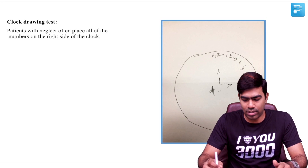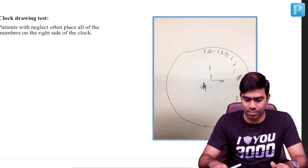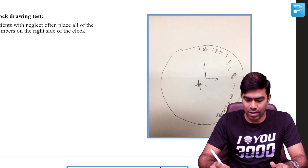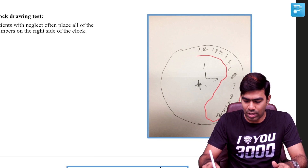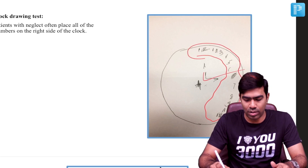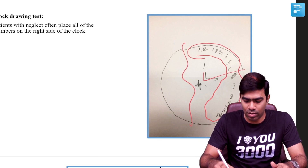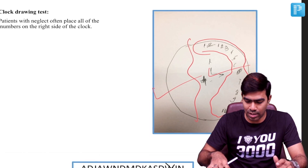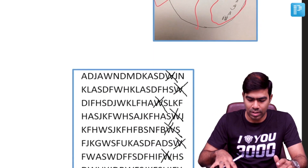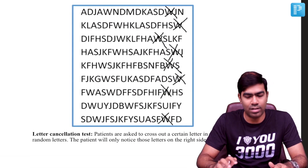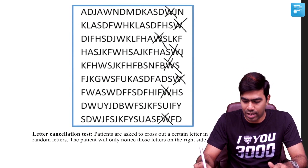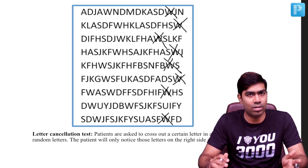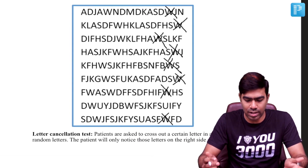In the clock drawing test, the patient will draw a clock with numbers clustered towards the right side only, ignoring the left side of the clock. This also tells you that the patient is having left-side hemispatial neglect.